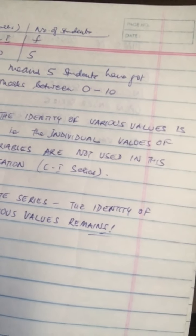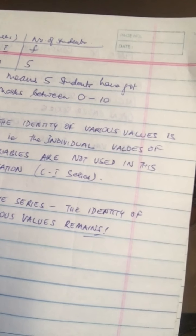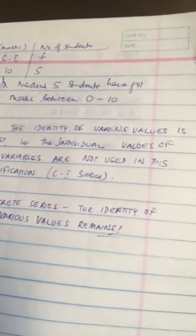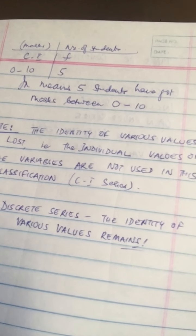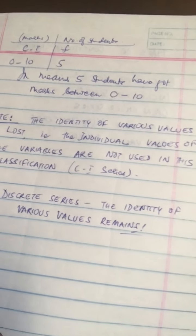So again, let me just tell you one more thing that you have to make a note that here what we do is that each class is used to represent a class. So we really don't know how many exactly have got how much. Like in the discrete series, as we saw, the identity of the various values is not lost. But here, we don't know who got 0, who got 1, who got 3, who got 10. So that's what, that is grouped. That's grouped data that we're going to talk about.